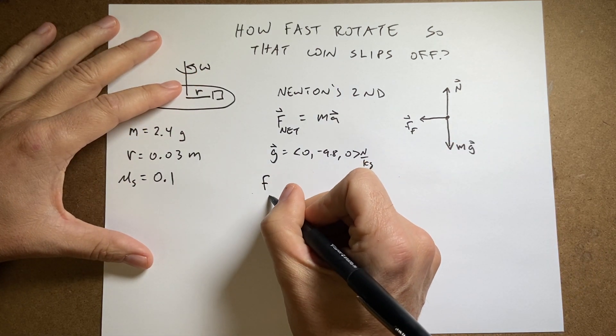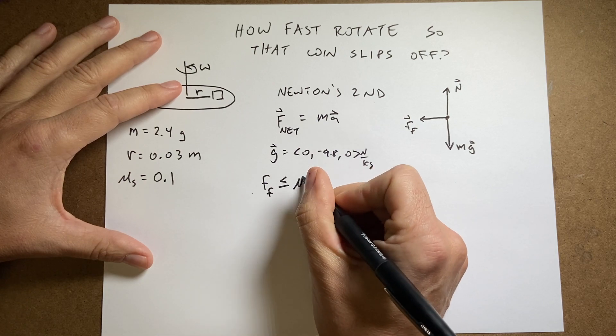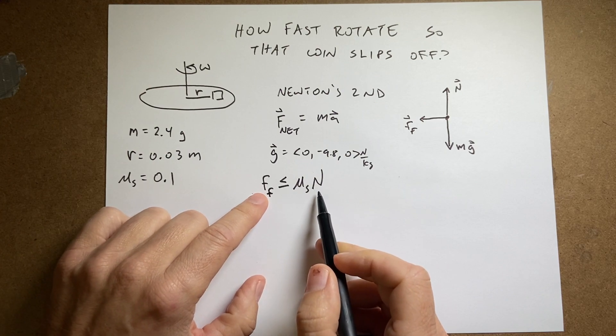The magnitude of the frictional force, and this is static, is going to be less than or equal to the coefficient of static friction times the normal force. So this does not tell you the vector direction. This is just the magnitude.